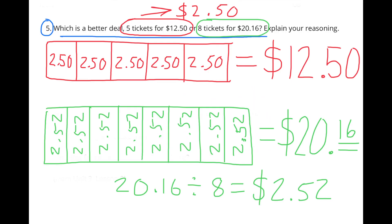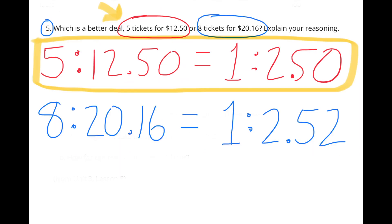I made a tape diagram representing $20.16 and 8 tickets. So you'll see that there's 8 sections. $20.16 divided by 8 equals $2.52. Each ticket is worth $2.52. So the best deal is 5 tickets for $12.50.